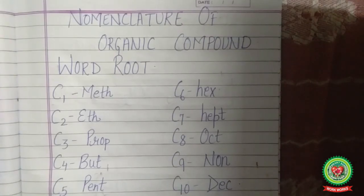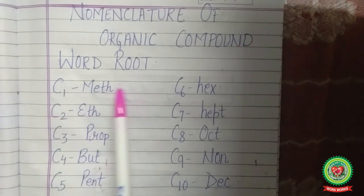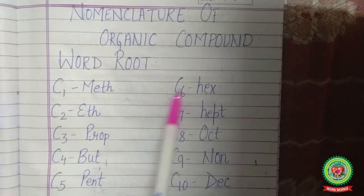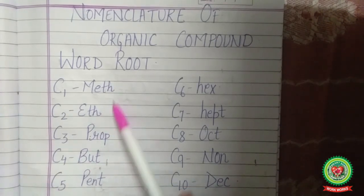We are proceeding with the nomenclature of organic compounds. The first thing that should be clear to you is the word root. The word root is the basic skeleton of an organic compound — that is, the number of carbon atoms present in the basic chain. If one carbon is present: meth; two: eth; three: prop; four: but; five: pent; six: hex; seven: hept; eight: oct; nine: non; ten: dec.